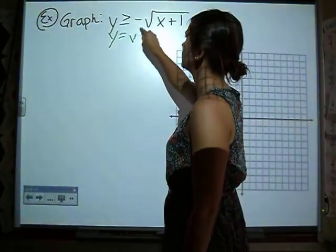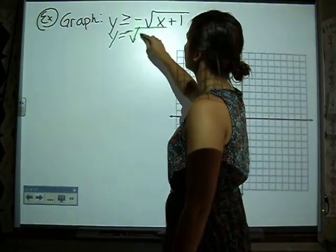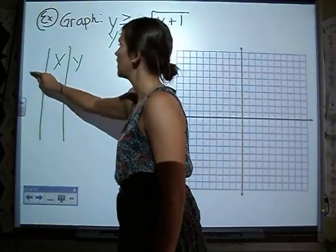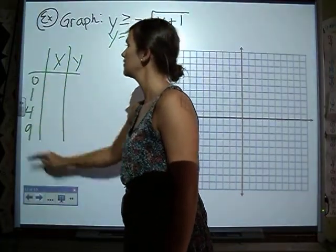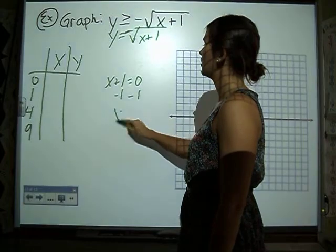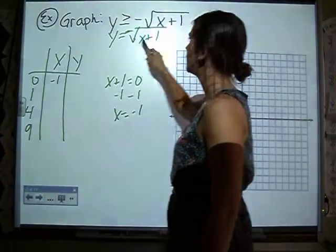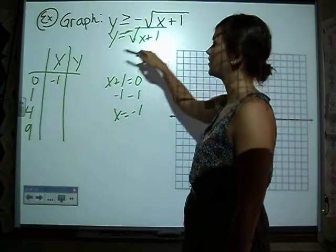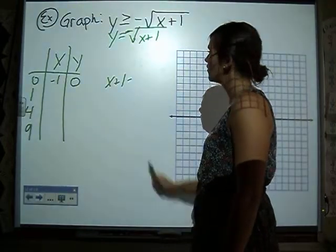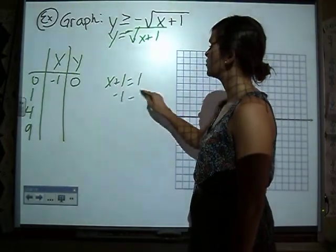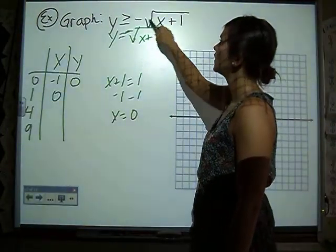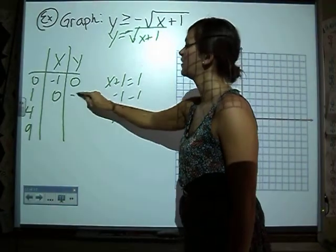Here we're going to graph y is greater than or equal to negative square root of x plus 1. So we're going to graph the equation. There's a negative sign. On our x, y table, our special values that we want to get are 0, 1, 4, and 9. So if we let x plus 1 equal 0, x is negative 1. If we put negative 1 in, negative 1 plus 1 is 0, square root of 0 is 0. If we put 1 in, we want the underneath our square root to equal 1. Subtract 1 on both sides, x equals 0. When x is 0, x plus 1 is 1. Square root of 1 is 1 times the negative is negative 1.